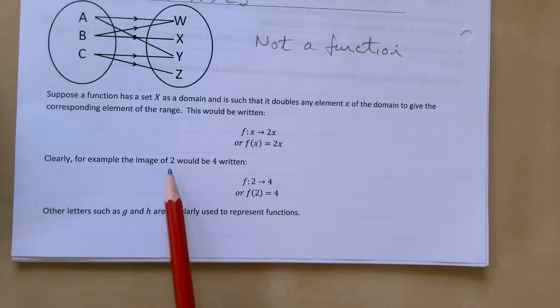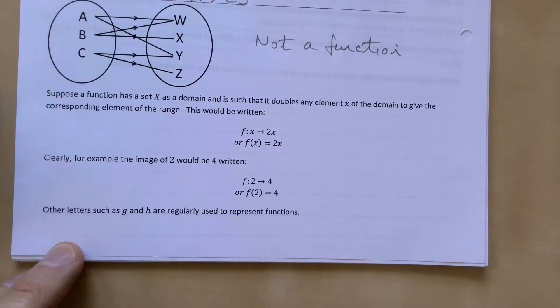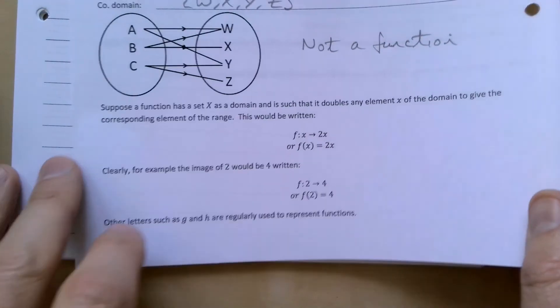So clearly, for example, the image of 2 would be 4. So 2 goes to 4 in this case, or f(2) = 4. Normally it's f—that's our first go-to for a function. You'll have heard of f(x) a lot, but other letters such as g and h are regularly used to represent functions as well.